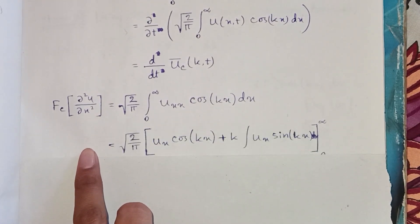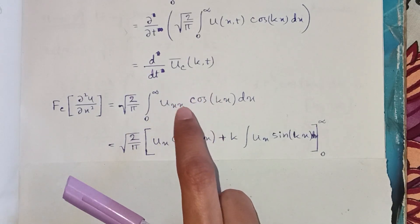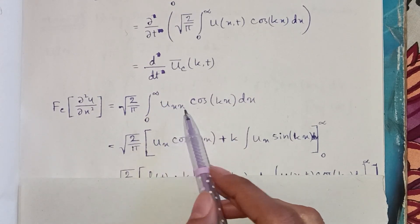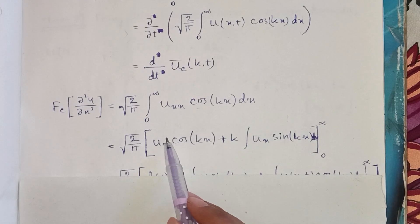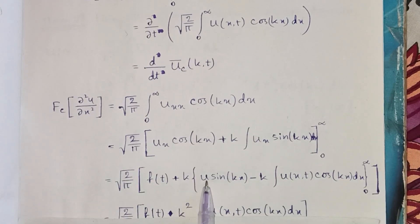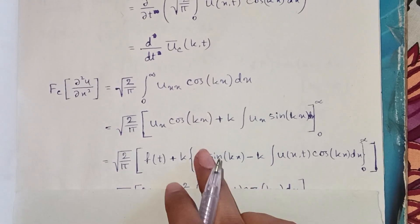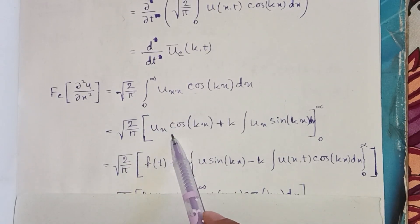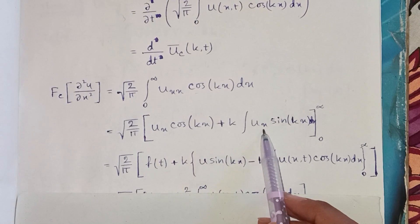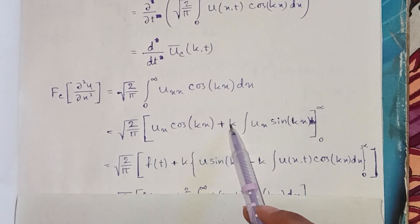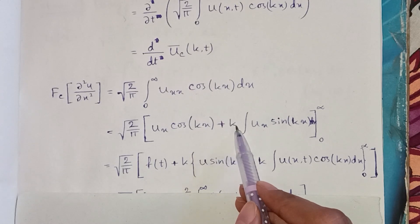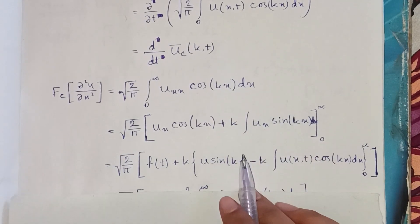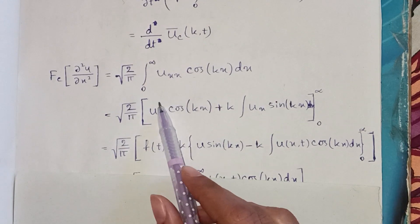To solve this integration we will use integration by parts. u = u_xx will be our first function and cos(kx) will be our second, so that u_xx becomes u_x and eventually turns into u. So: u · ∫v dx — u_xx becomes u_x, cos(kx) remains as is, then we differentiate cos(kx), the negative sign becomes positive, k comes out of the integration, and u_x becomes u.